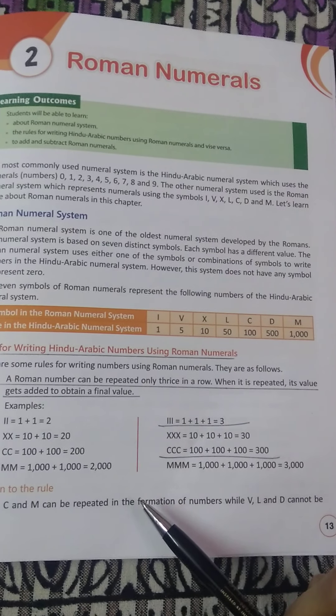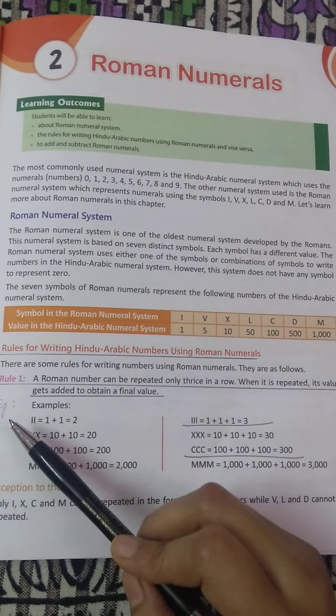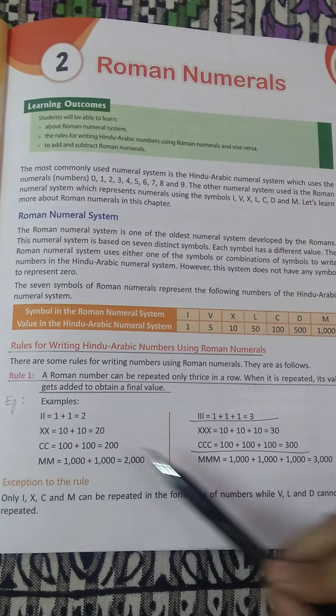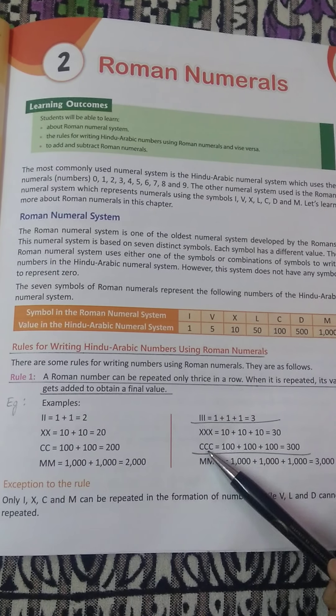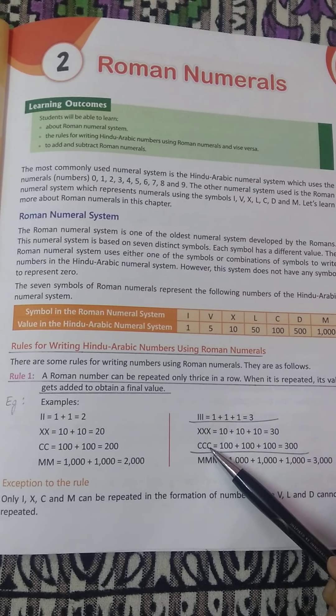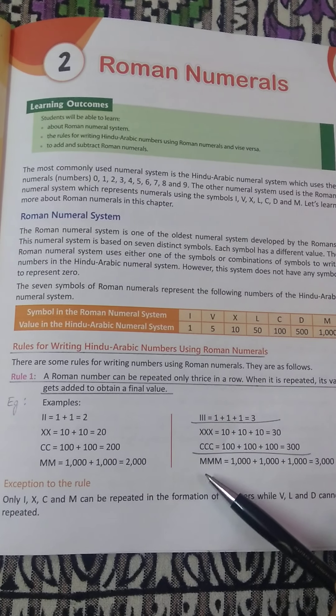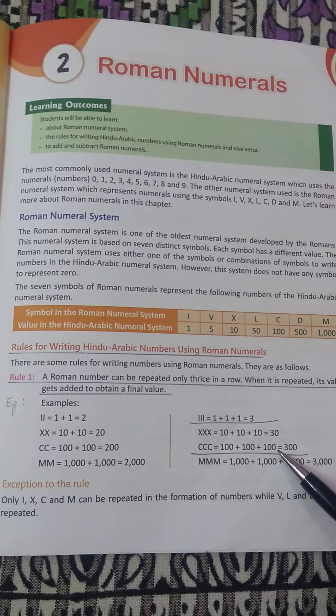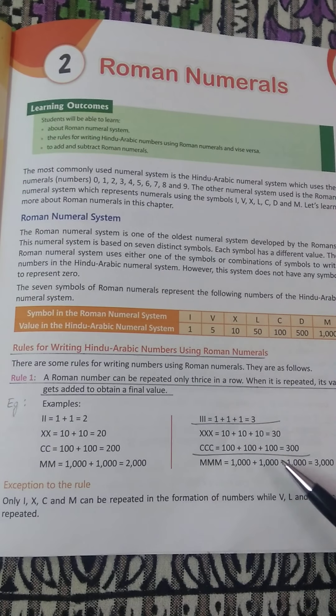Now some examples are given, many examples are given. So we are supposed to write only two examples for each rule. So you will use the short form of example, that is eg colon, and whatever two examples are underlined you are supposed to write them one after other. One example in one line, second example in second line.